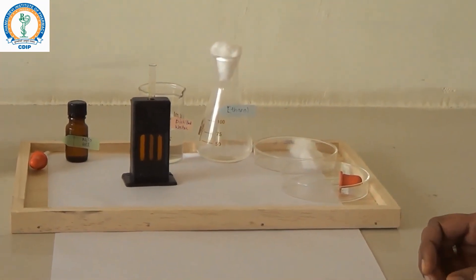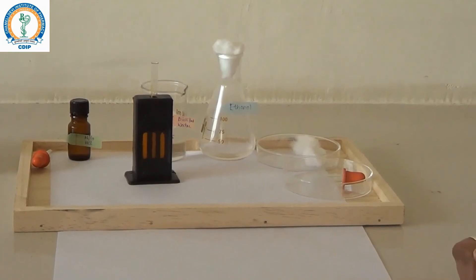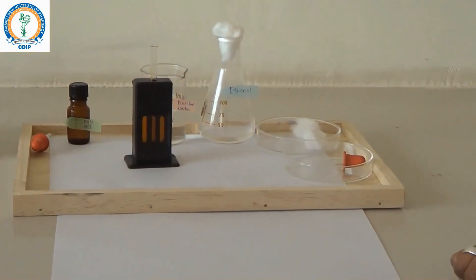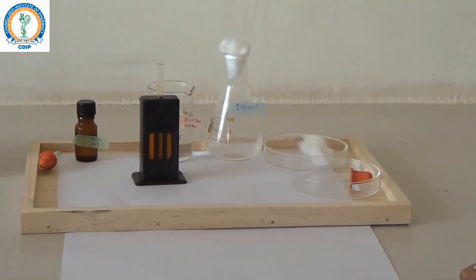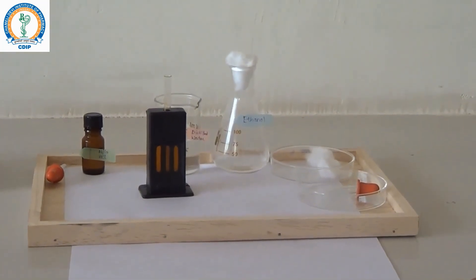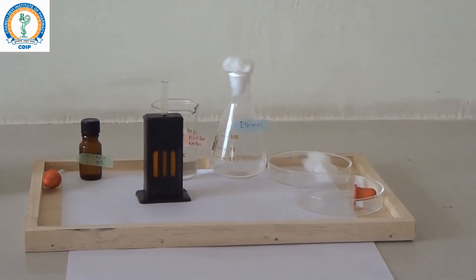Normal levels of hemoglobin in males are 14 to 18 grams percent and in females are 12 to 16 grams percent. Thank you.